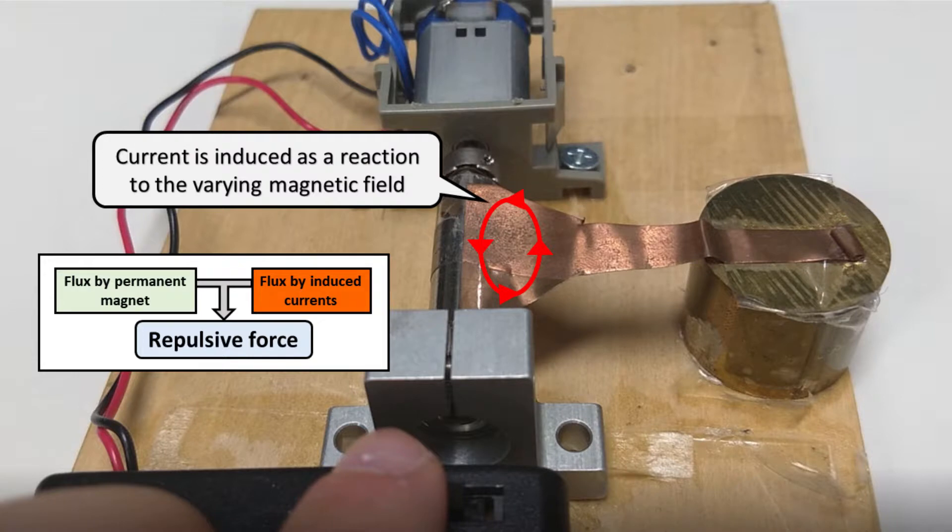When a variable flux crosses the copper sheet, a current is induced. And this current is going to induce a second magnetic flux. This magnetic flux will interact with the flux generated by the permanent magnet, resulting in repulsive forces.